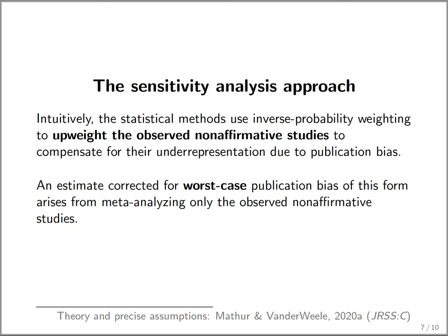The theory and precise statistical assumptions behind how this works are available in a statistics paper. Another thing you can consider using this approach is the possibility of worst-case publication bias — publication bias that favors affirmative studies by essentially infinity-fold over non-affirmative studies. Obtaining an estimate corrected for this worst-case scenario turns out to coincide with meta-analyzing only the observed non-affirmative studies.